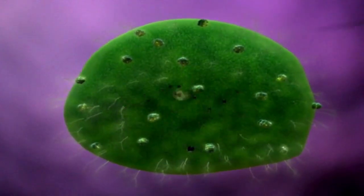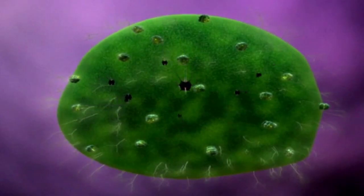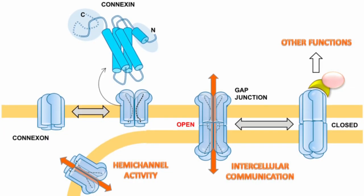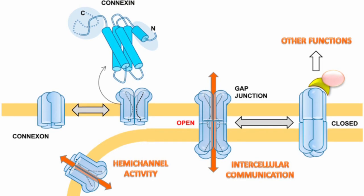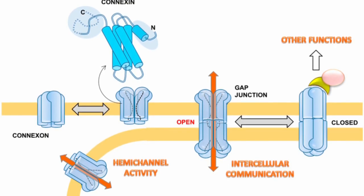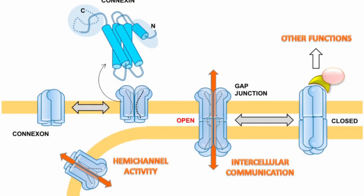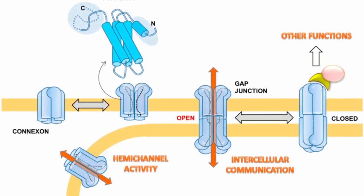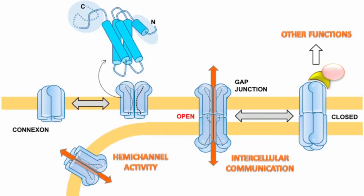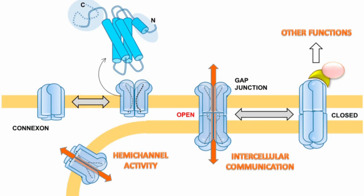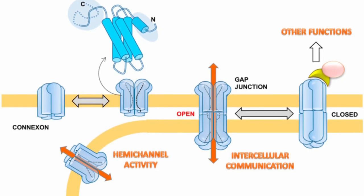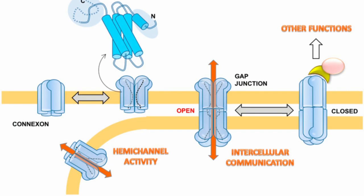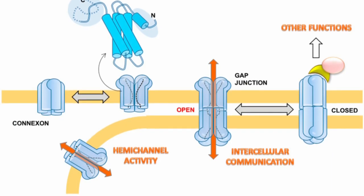There are quite a few types, so let's do a quick run-through. Direct cell-to-cell communication occurs through gap junctions — channels that directly connect the cytoplasm of adjacent cells, allowing for the exchange of ions, small molecules, and signaling molecules. Gap junctions are important for synchronizing the activity of cells in tissues like the heart and nervous system.